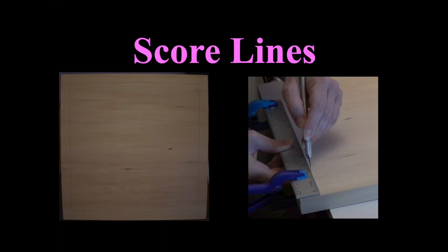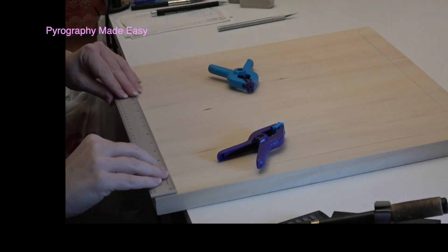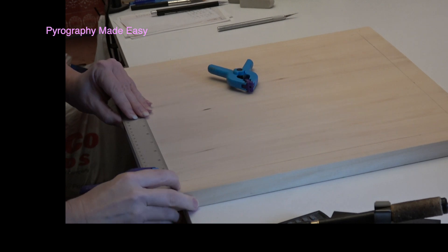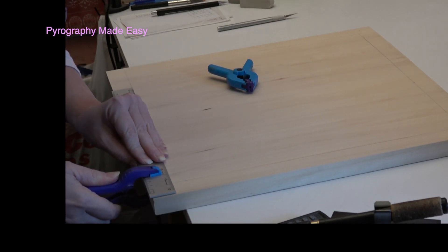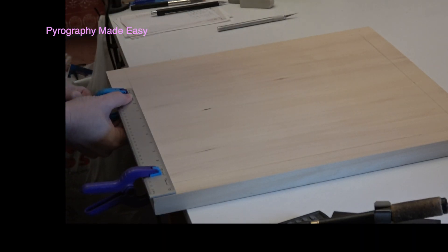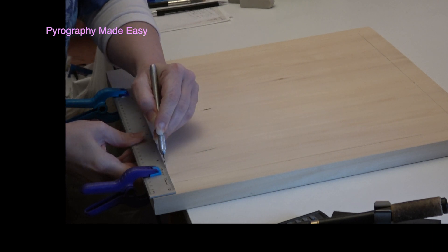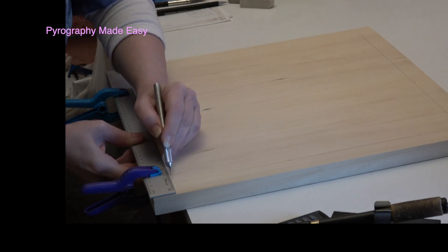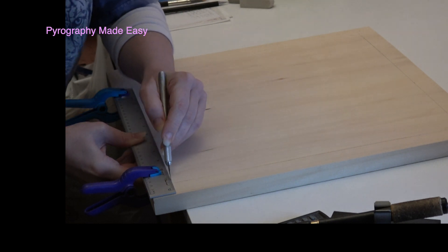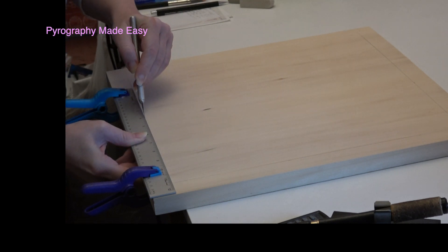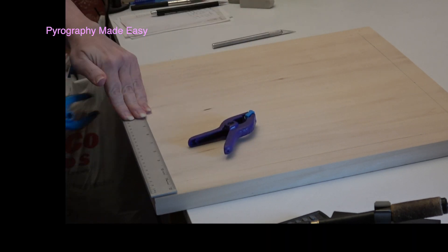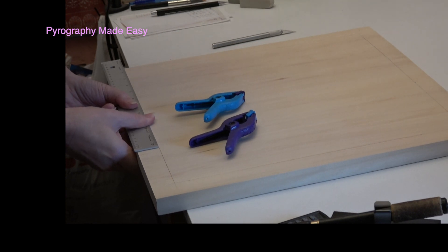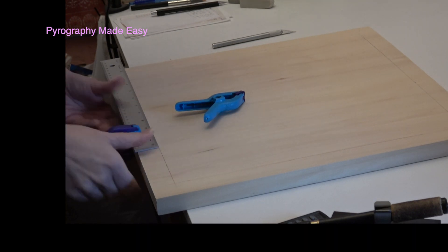Clamp a metal straight edge to the board using at least two clamps. Make sure to line up the edge with the pencil line. Then use a knife with a sharp blade and score or cut along the pencil line. I am pushing the blade up against the metal straight edge to make sure that it follows the line. My straight edge isn't long enough for the board so I am repositioning it.